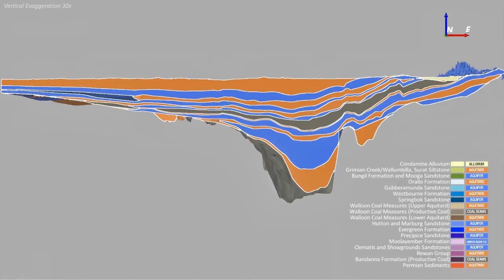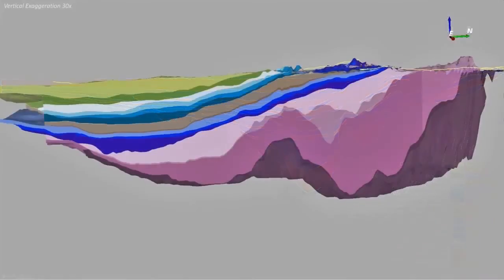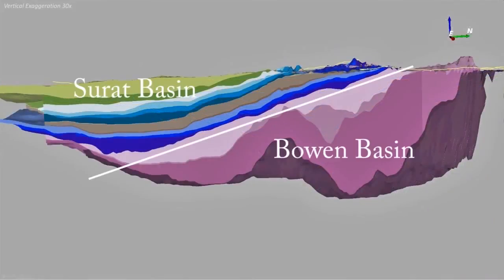The coal seam gas-producing formations are shown in grey, and the Condamine Alluvium in the upper right is in yellow. In the south, the Surratt Basin overlies the Bowen Basin.